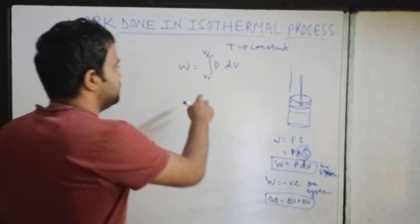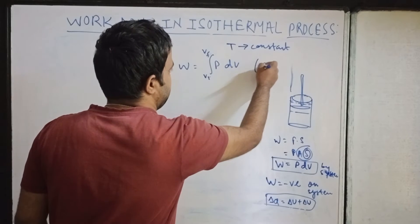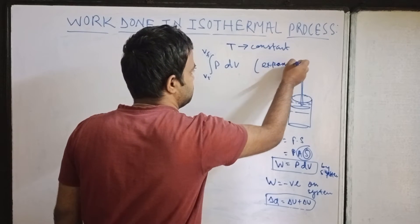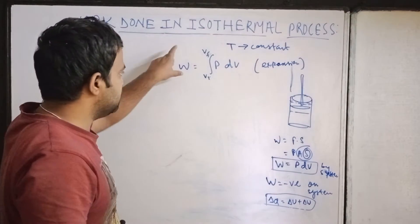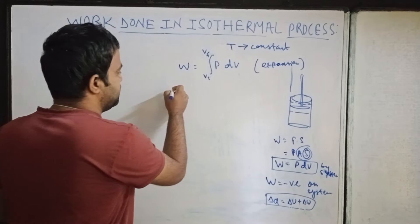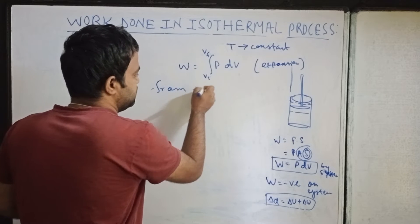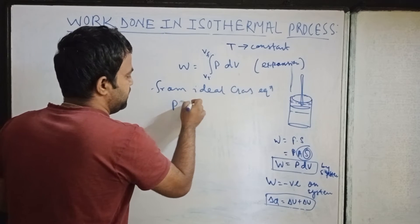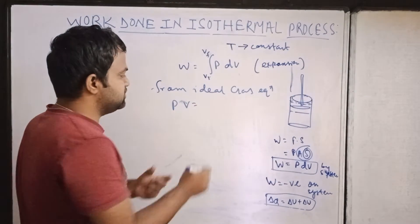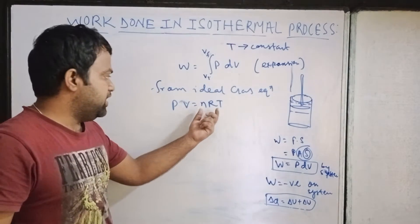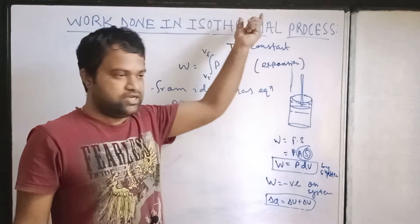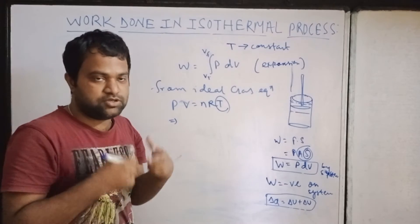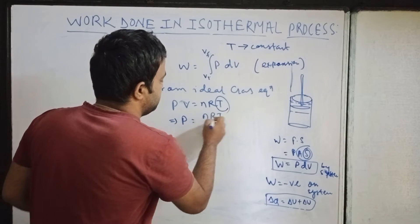Our interest is to calculate the work done in an isothermal process with volume going from VI to VF. This is the case of expansion, so we get a positive work done. From the ideal gas equation, PV equals nRT. The gases that obey this law are called ideal gases. Since we are discussing the isothermal case, temperature remains constant.